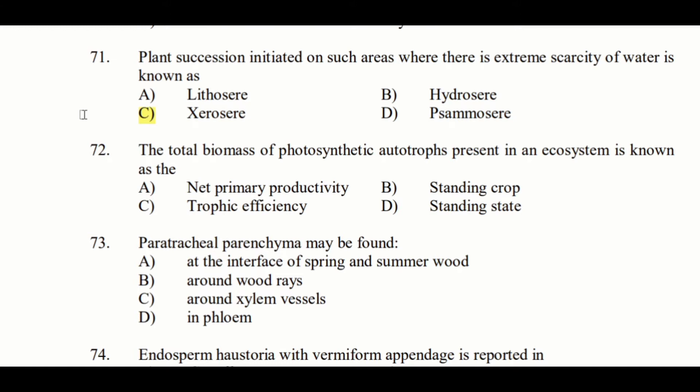Plant succession is classified based on medium and substratum into several kinds: Lithosere, Xerosere, Hydrosere, and Samosere. Hydrosere is succession in a freshwater body such as pool, pond, lake, marsh, swamp, or bog.